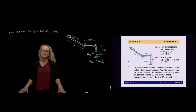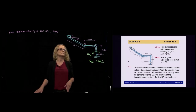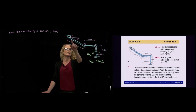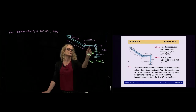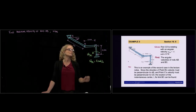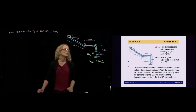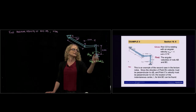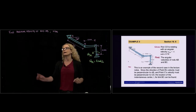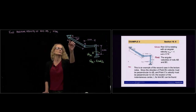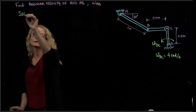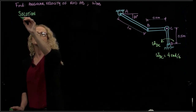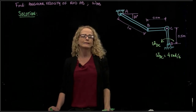This is example number 3 from section 16.6. Here we have a system of connecting bars: bar AB, where A is connected to ground by a pin, then bar BC connected with pins, and bars B and C connected to CD by a pin, and D is connected to ground by a pin. We are given the angular velocity of rod BC and asked to calculate the angular velocity of rod AB. The approach I'm going to use is the instant center of rotation.